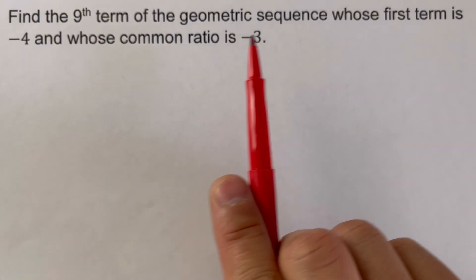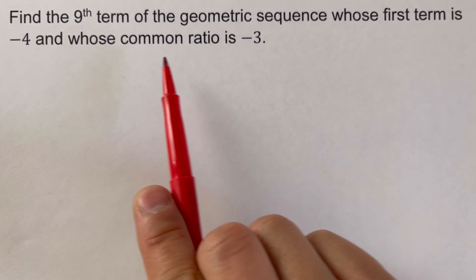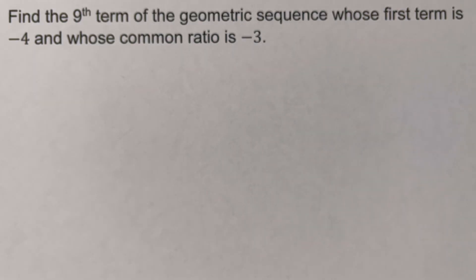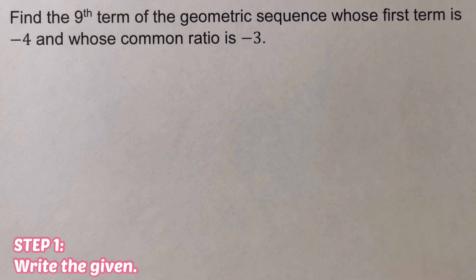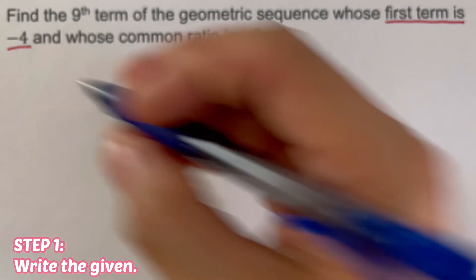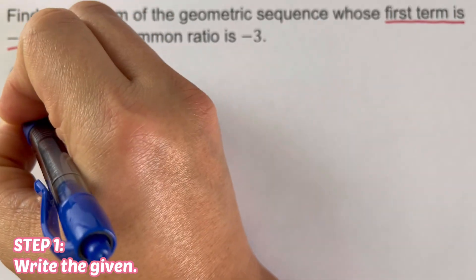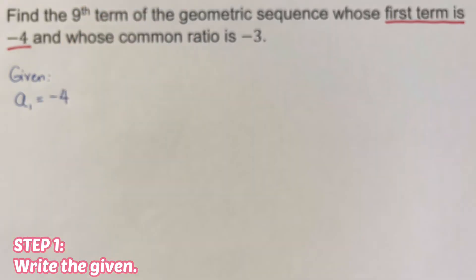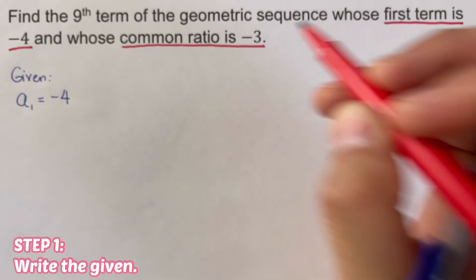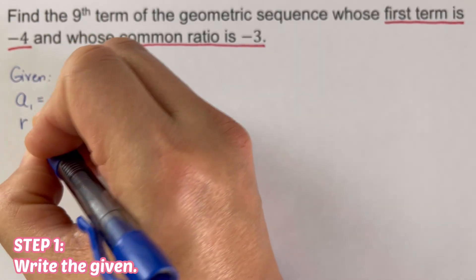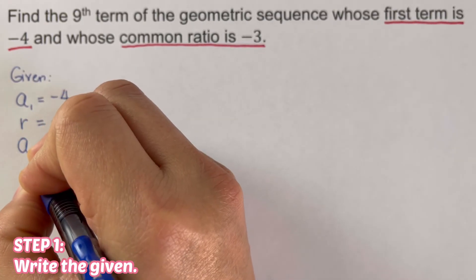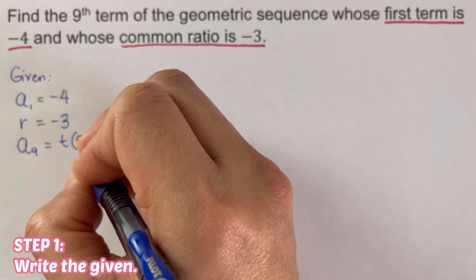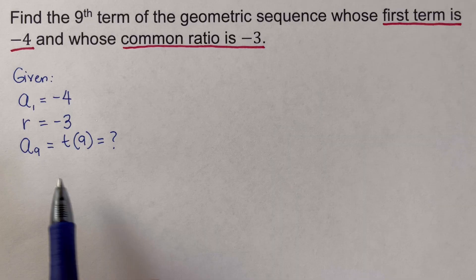Now let's move on to the next example: find the ninth term of the geometric sequence whose first term is negative 4 and whose common ratio is negative 3. Following the same steps, we write the given values: a sub 1 equals negative 4, r equals negative 3, and we are looking for a sub 9, also written as t of 9.